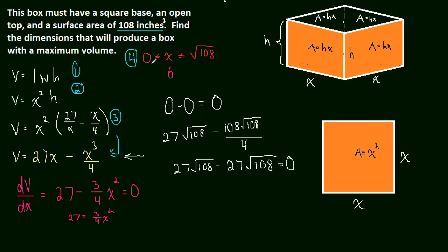When we plugged in 0, the volume was 0. And that makes sense because if x is 0, that's what we said before. When x is 0, everything goes to height. And if you have only one dimension, only height, you're not going to have any volume. Likewise, if x is the square root of 108, then all of the area is going to be in the base. And you will have 0 height. And if you have 0 height, then you have 0 volume.